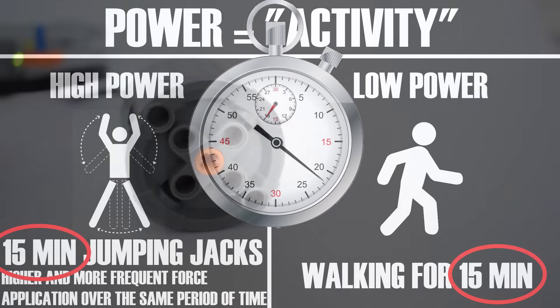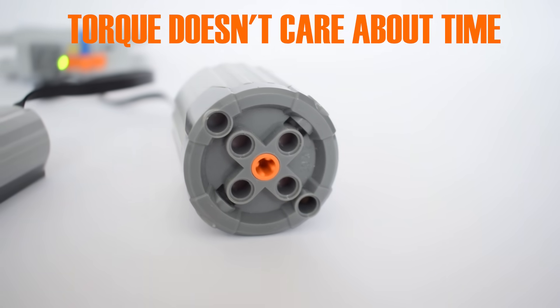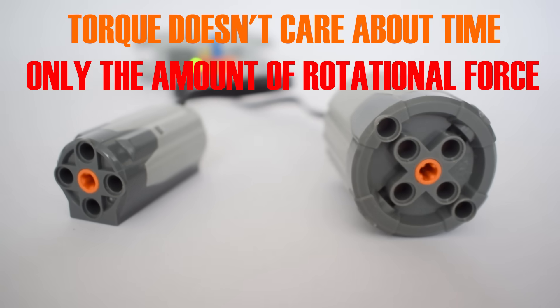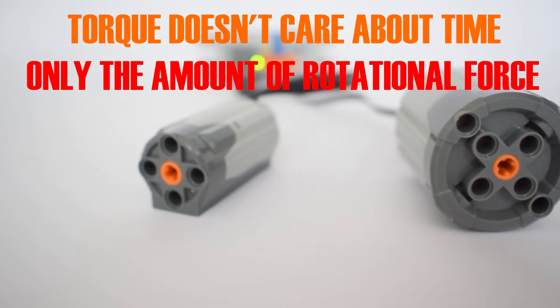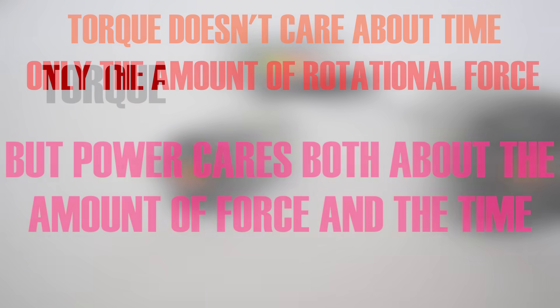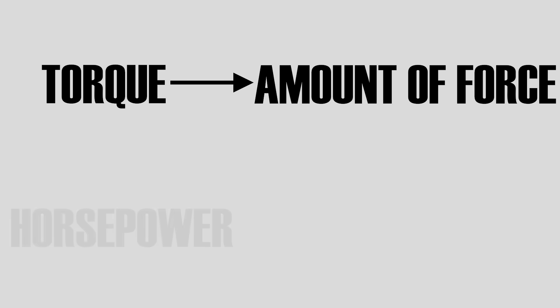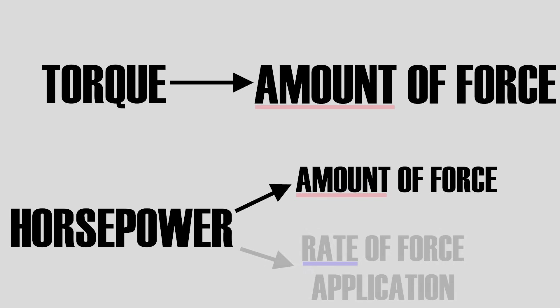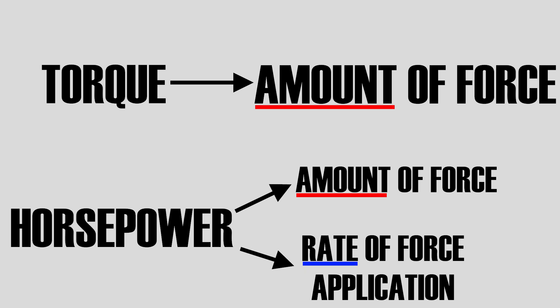When we speak about torque, time isn't a factor. We simply measure how much rotational force is generated and that is our torque. That's it. But horsepower measures how much force is generated over a period of time. This means that torque is influenced by only one factor: the amount of rotational force. But horsepower is influenced by two factors: the amount of force and how many times that force can be exerted over a given period of time.